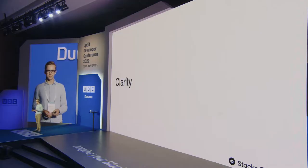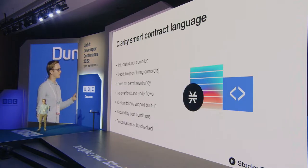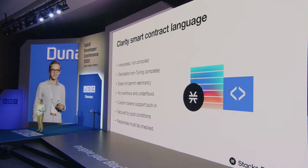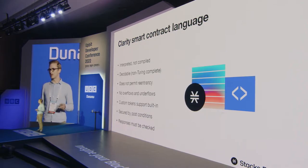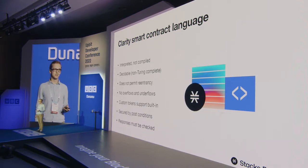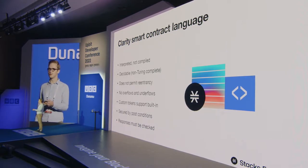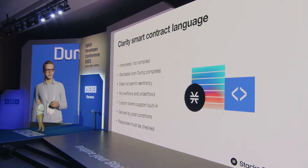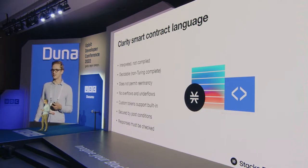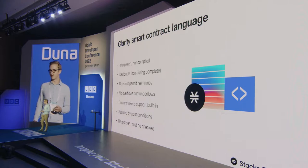That's an overview of Proof of Transfer — a technical deep dive resource will be available at the end. Now let's jump into Clarity. The Clarity smart contract language is a bit different from Solidity or Rust. First, Clarity is an interpreted language, not a compiled language.